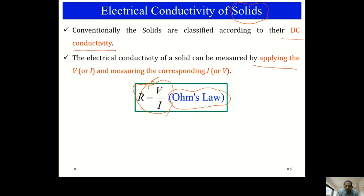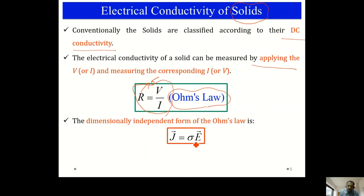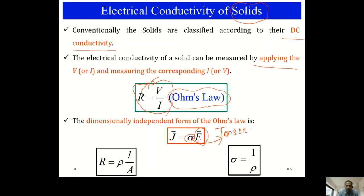Ohm's law in its dimension-independent form can be written as: current density J equals conductivity sigma times electric field E. Here J, sigma, and E are independent of the sample dimensions — they depend on the nature of the sample. J and E are vectors, and sigma is a tensor of rank 2. The resistance can be written as rho times L over A, where L and A are the length and cross-sectional area, and conductivity sigma is the reciprocal of resistivity rho.